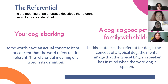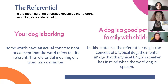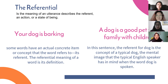The first statement is 'your dog is barking.' Some words have an actual concrete item or concept that the word refers to. The lexical meaning of a word is its definition. The second one is 'a dog is a good pet for a family with children.' In this sentence, the reference for dog is the concept of a typical dog — the mental image that the typical English speaker has in mind when the word dog is spoken.